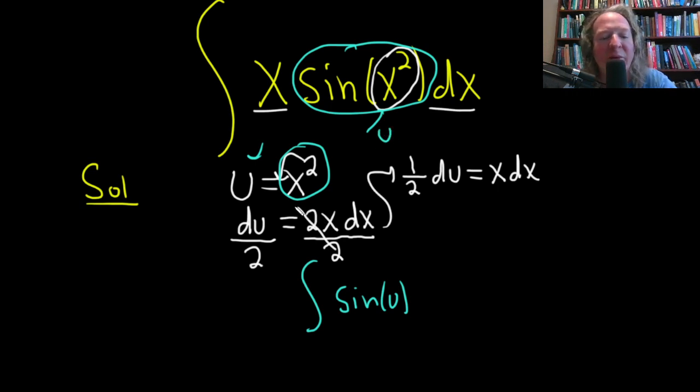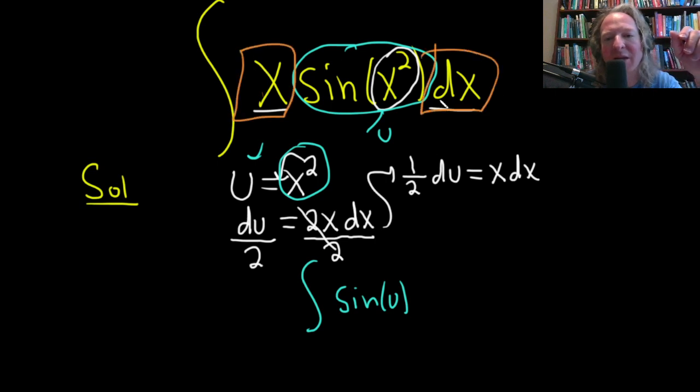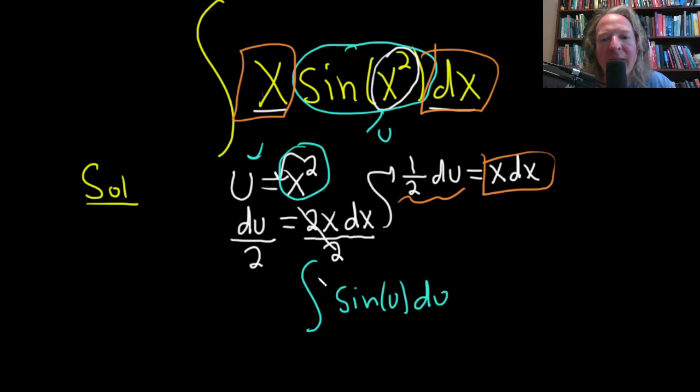So we're left with a couple things here, right? We're left with this x and this dx, but that's here and we established that that's one half du. I'm going to go ahead and put the du here and then bring the one half outside like this. And so now we're ready to integrate.